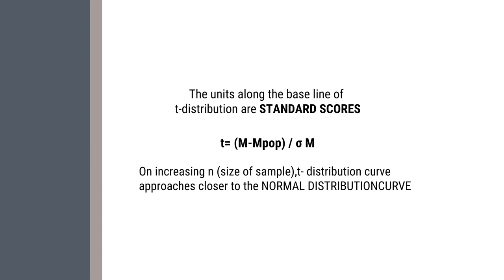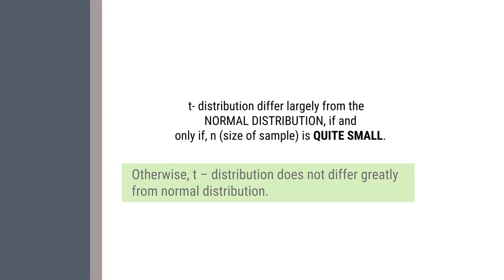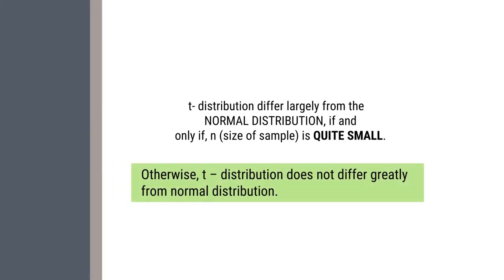On increasing n, where n represents the size of the sample, the T distribution curve approaches closer to the normal distribution curve. So sample size is very important — it signifies whether the distribution is closer to or deviates from the normal distribution. T distribution differs largely from normal distribution if and only if the size of the sample is quite small. Otherwise, T distribution does not differ from the normal distribution.